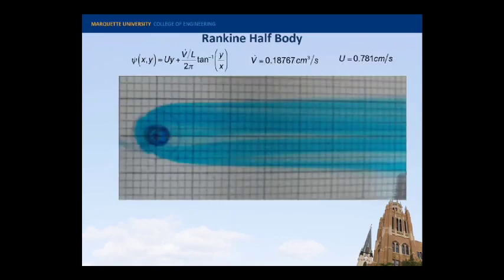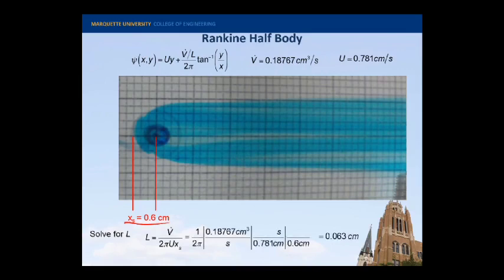So here is our still image. This is the distance and stagnation location, about 0.6 centimeters. So I can rearrange our algebraic equation for the stagnation location and solve for L. And I get about 0.063 centimeters. That's quite thin. As a reference, the gap between the plates is about a quarter inch, which is about 0.6 centimeters. So it's a tenth. The dye that you see here in this image is about only a tenth of the thickness between the gaps in the plates.